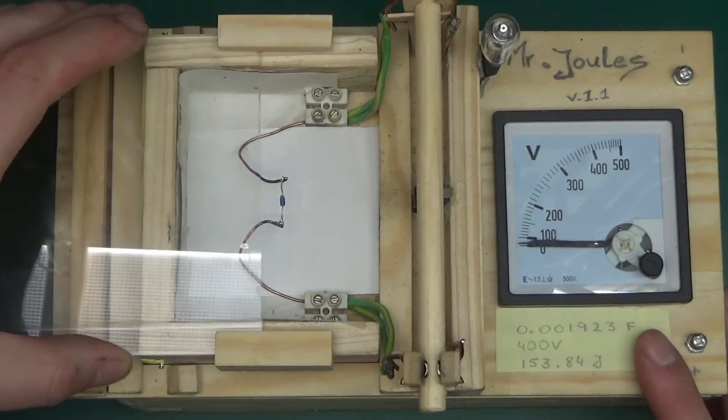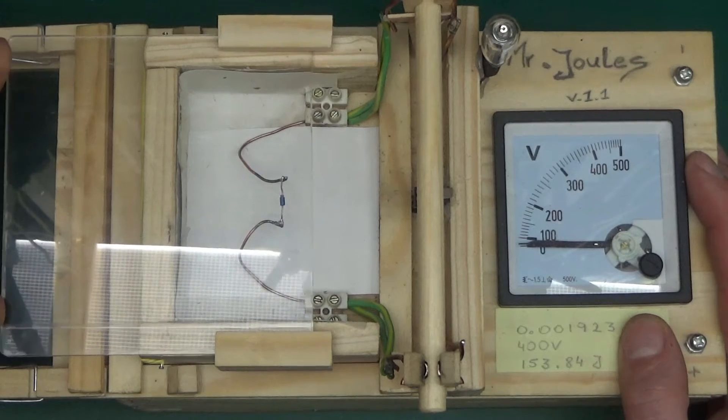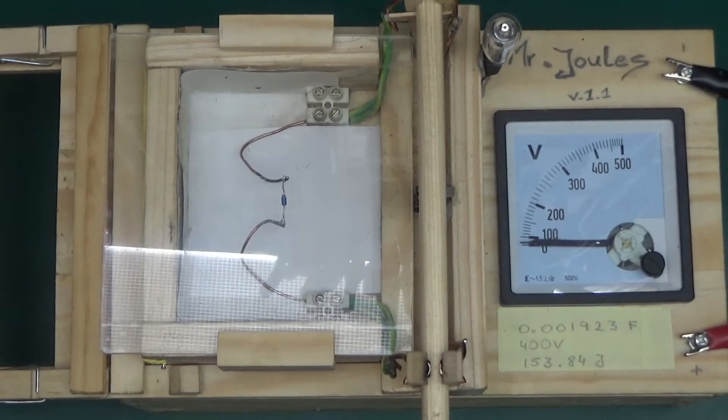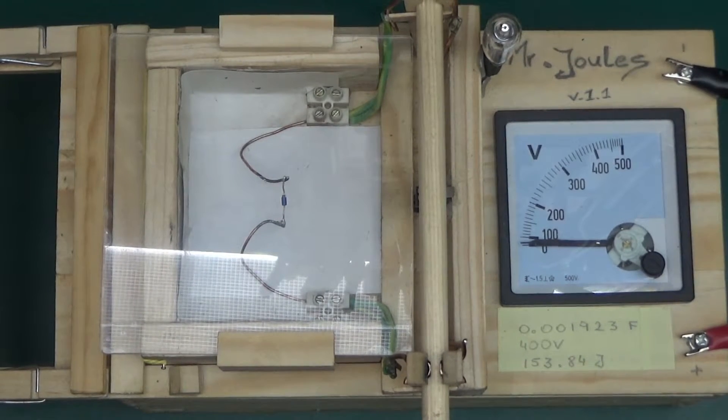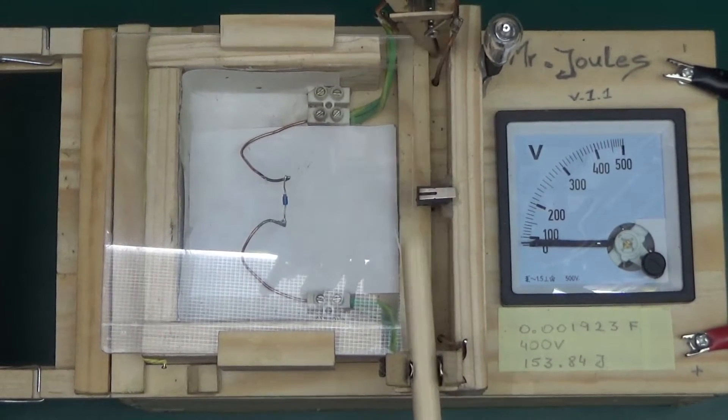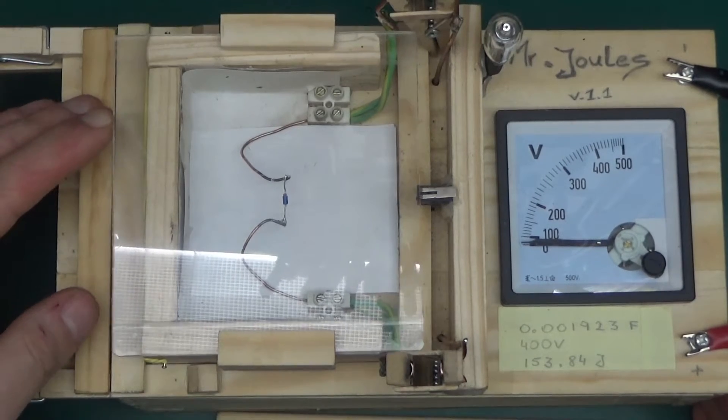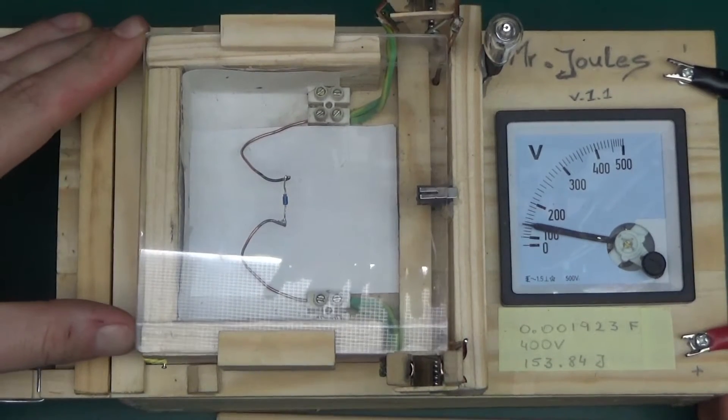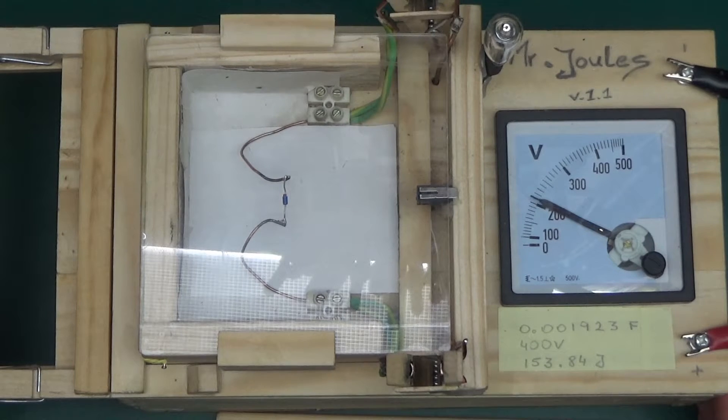Let's put the cover on. The Diac is already loaded into the chamber. So what will the Diac do when exposed to 153.84 J? Let's apply the power, remove the chicken stick and close the chamber and Mr.Jewels is charging.